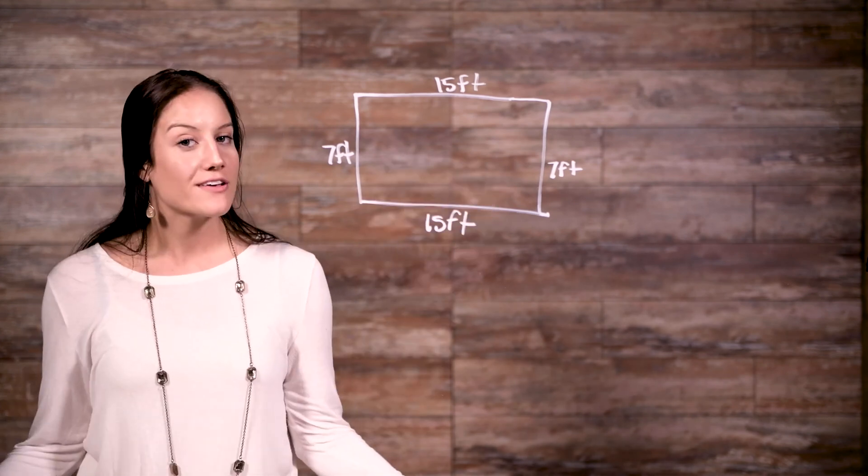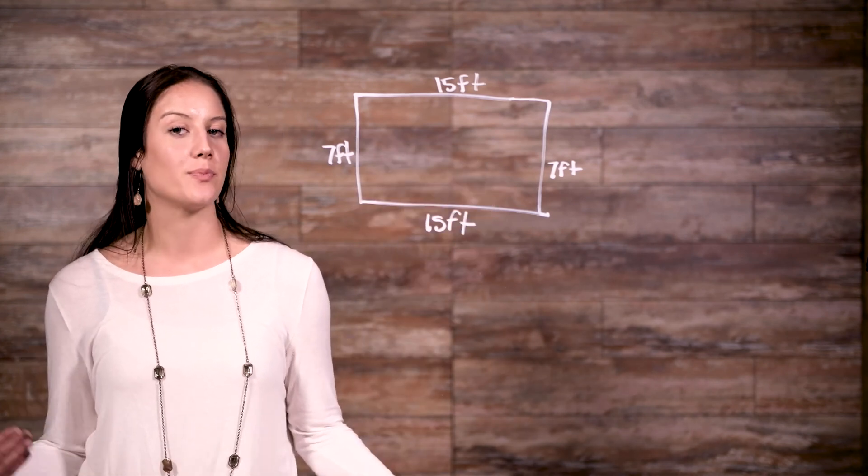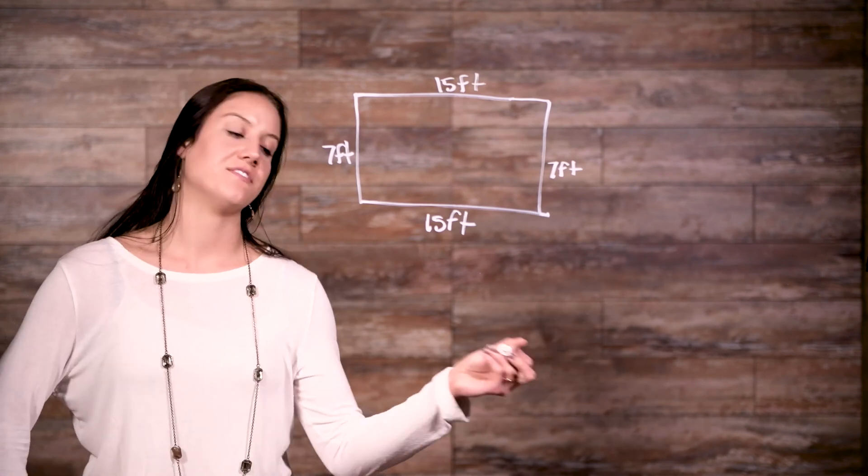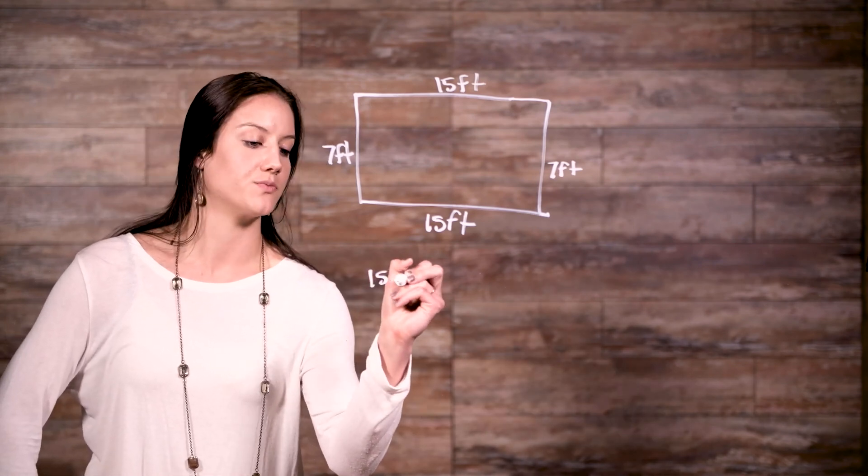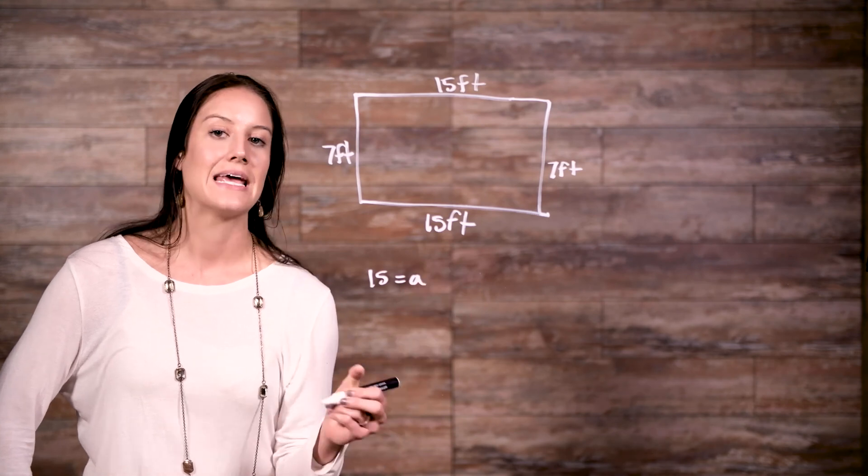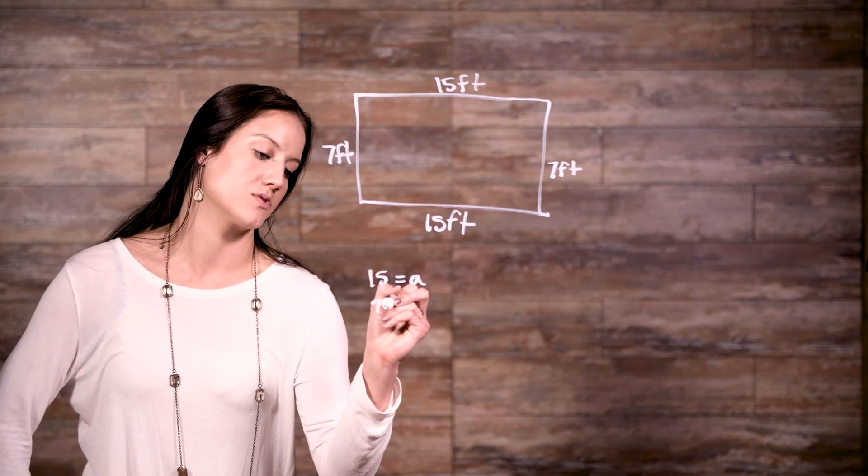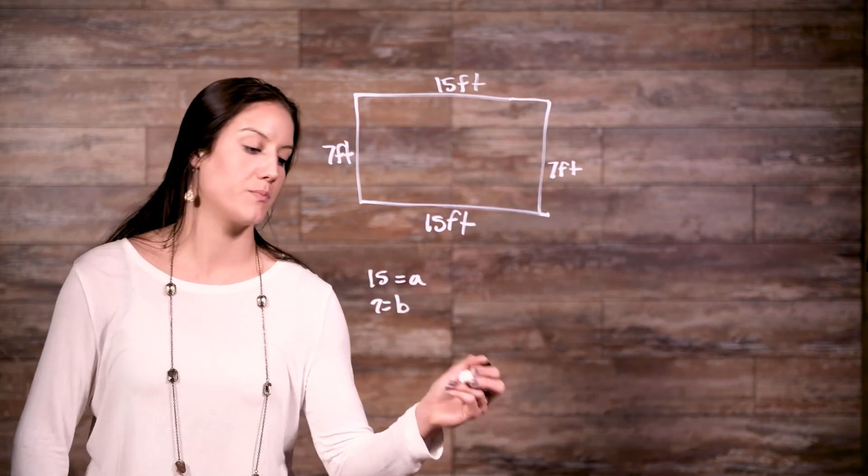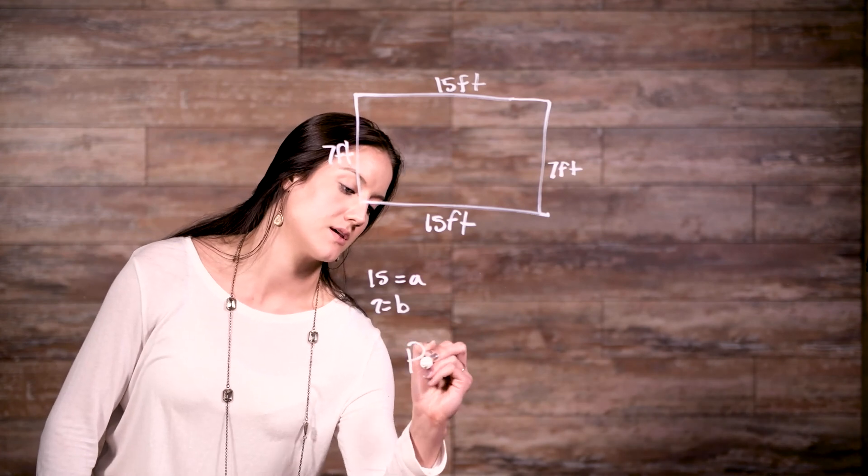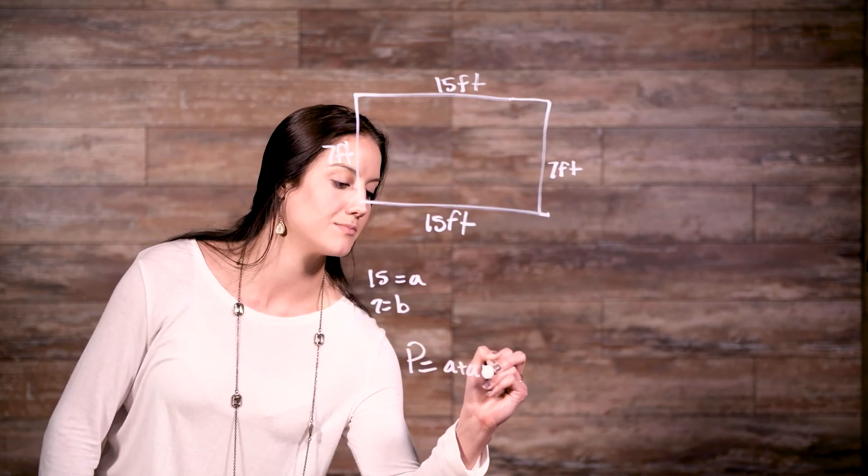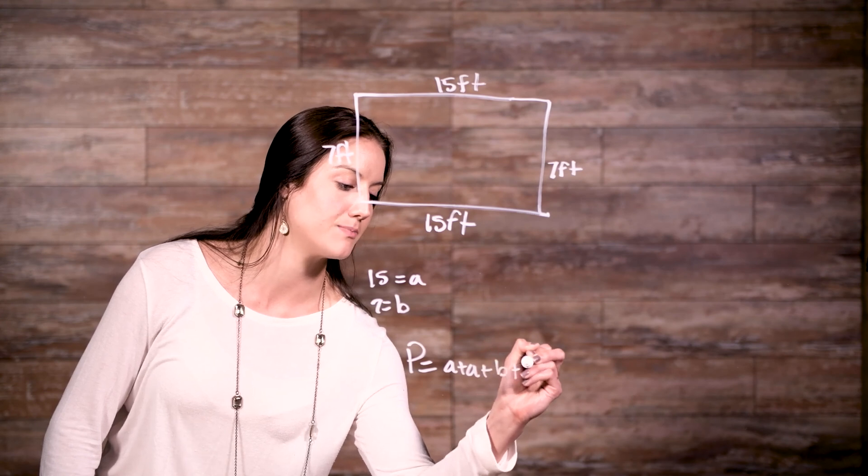So we have all the information we need. Now we just add up all the sides. Let's start with our formula. Let's say 15 is equal to a, and 7 is equal to b. So we have perimeter is equal to a plus a plus b plus b.